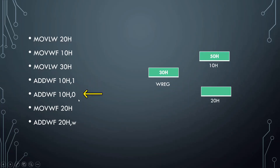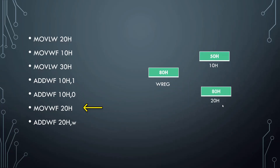ADDWF 10h, 0: this instruction adds whatever value is present in WREG — which is 30h — and the value in file register 10h, which is 50h. The sum is 80h. Since d is 0, the result is stored in WREG, so WREG now holds 80h. MOVWF 20h: this moves the value present in WREG (80h) to the file register at address 20h, so 20h now gets the value 80h.